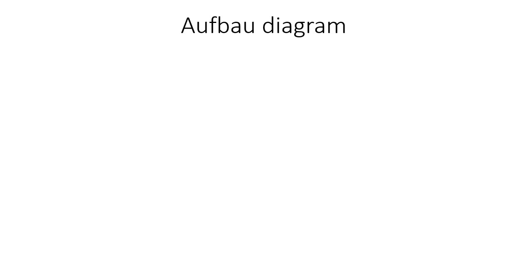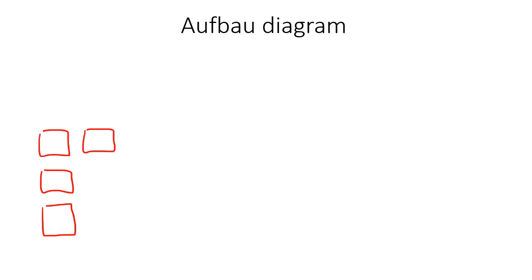Hey guys, so in this lesson we're going to be talking about an Aufbau diagram. Now maybe your teacher doesn't call it that, but what it is, is it's the blocks that your teachers maybe showed you, where it looks something like this, and then you've got these arrows that go in the blocks. That is what I mean when I say an Aufbau diagram. And to be able to do an Aufbau diagram, you need to understand electron configuration.